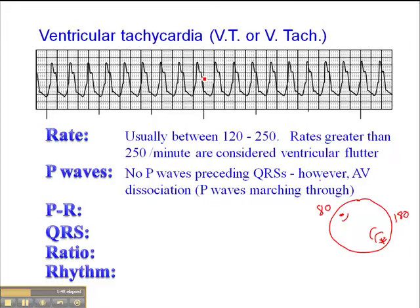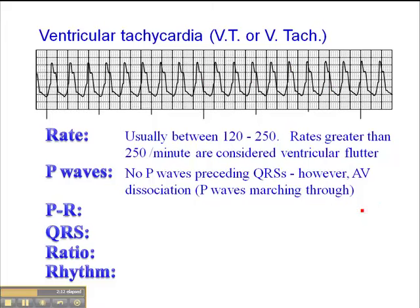If you saw a notch — evidence of a P-wave here, one here, and one over here — where these P-waves appeared equidistant and disassociated from the QRSs, that would support and be diagnostic of VTAC. In the other 50% of VTACs, there's a focus in the ventricle that depolarizes both the ventricle and the atria, so we don't see evidence of P-waves.